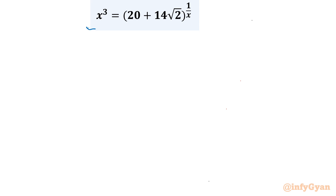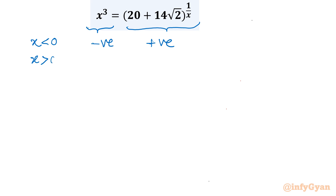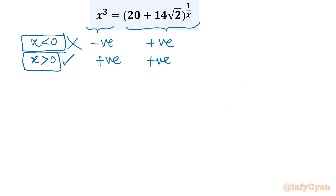On the left-hand side we have a cubic polynomial function and on the right-hand side an exponential function. If x is negative, LHS would be negative (since the power is odd), but RHS is an exponential function so it is always positive. Therefore x negative is rejected — no solution. Conclusion: x must be positive only.